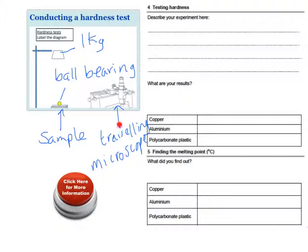Using the travelling microscope, we can see how big a dent is made, and polycarbonate plastic would have the smallest dent, because it's very, very hard, and copper is the softest of the three, so it would have the biggest dent.